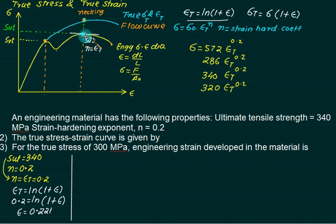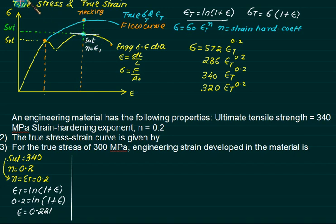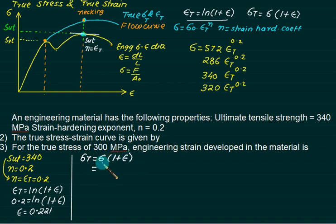The value of sigma on the engineering curve at SUT is 340 MPa. When this value is transferred to the true stress curve, it becomes the true stress. So we use: true stress = engineering stress × (1 + epsilon). This value is SUT, which is 340, multiplied by (1 + epsilon).